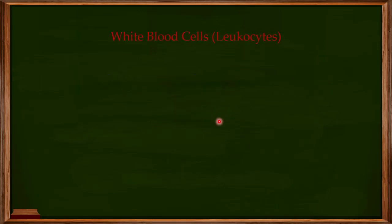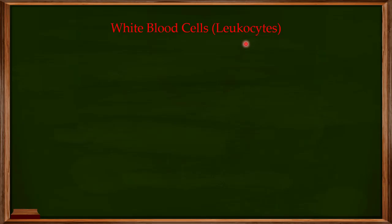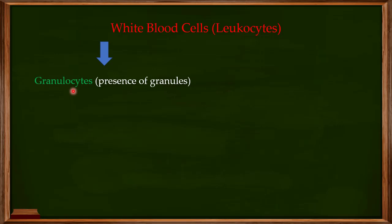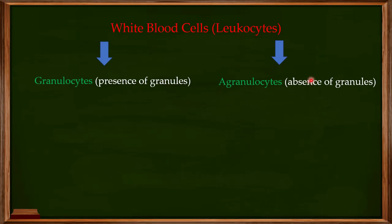When you talk about white blood cells, they are also known as leukocytes. We usually divide them into two classes: granulocytes, when there are granules present in the cells, and agranulocytes, which refers to the absence of granules in the white blood cells. The 'A' refers to the absence of these granules.